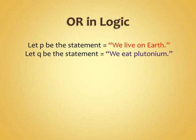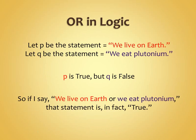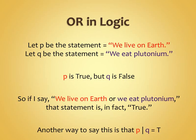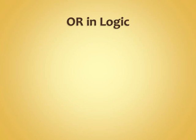Similarly, if I say 'we live on Earth OR we eat plutonium,' I'm saying either one or the other. That is a true statement because at least one of those is true. So true OR false is true.